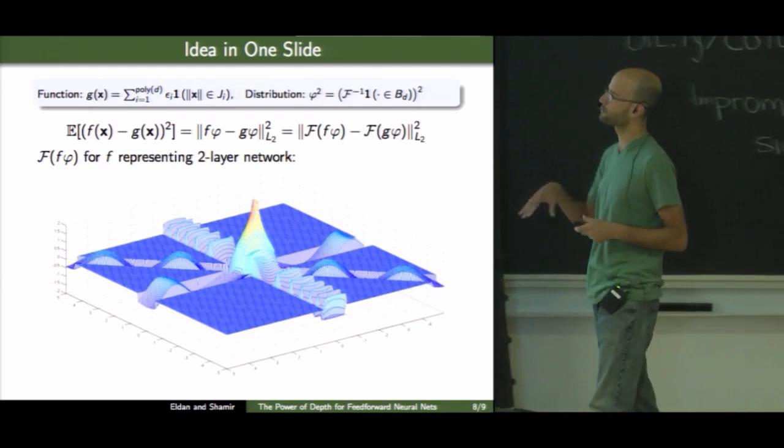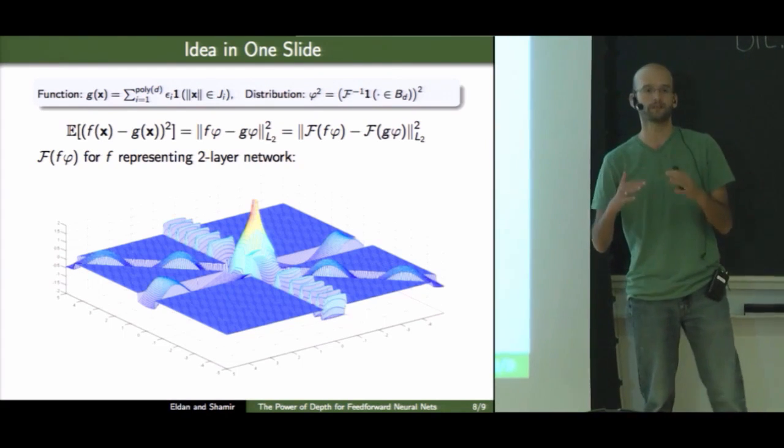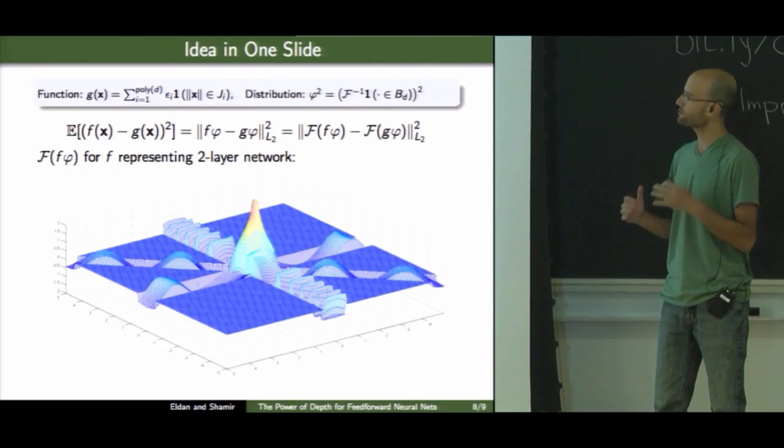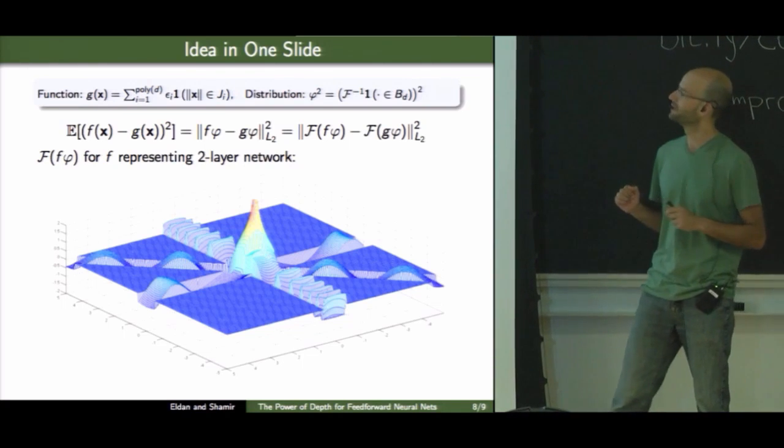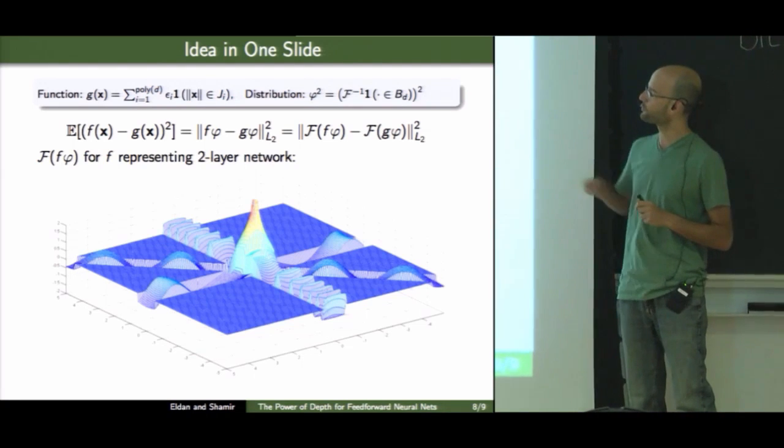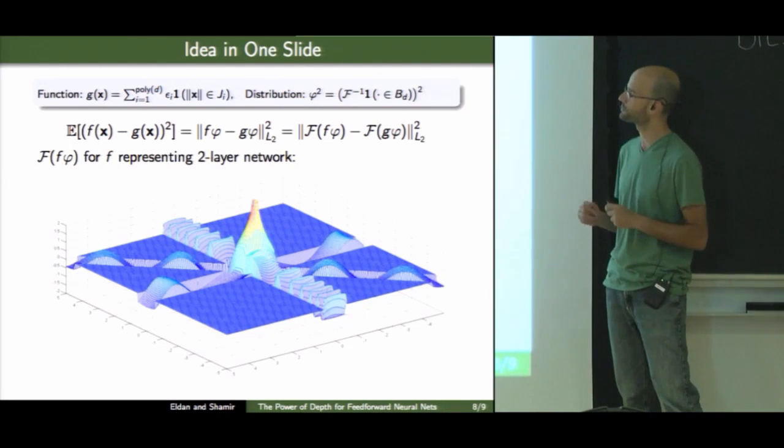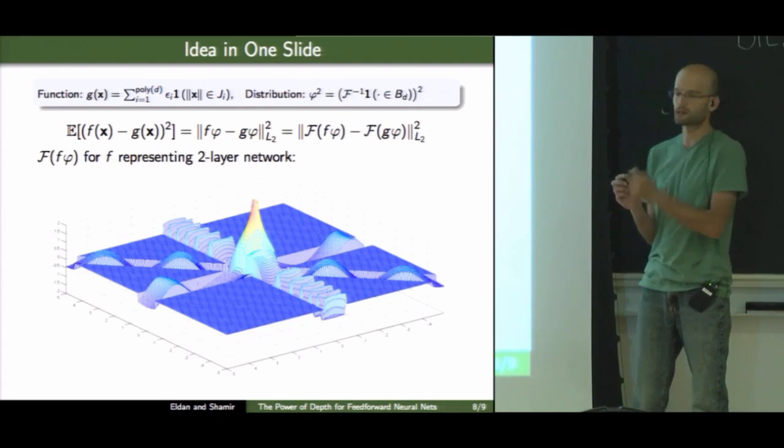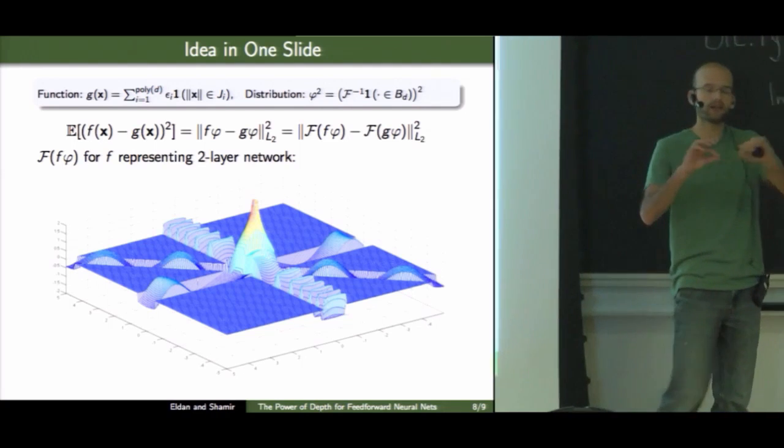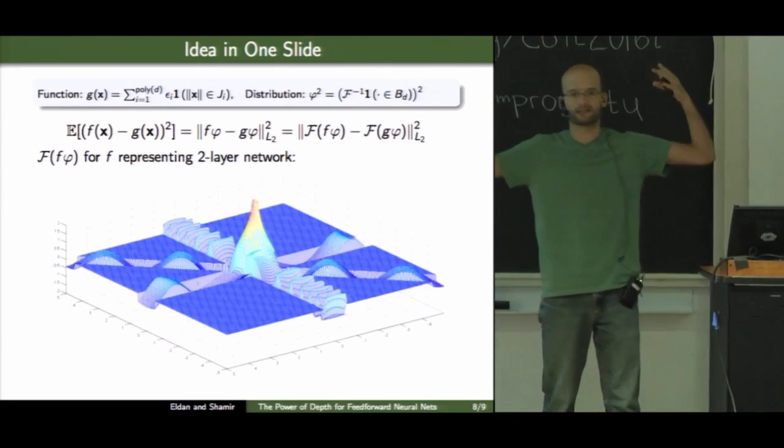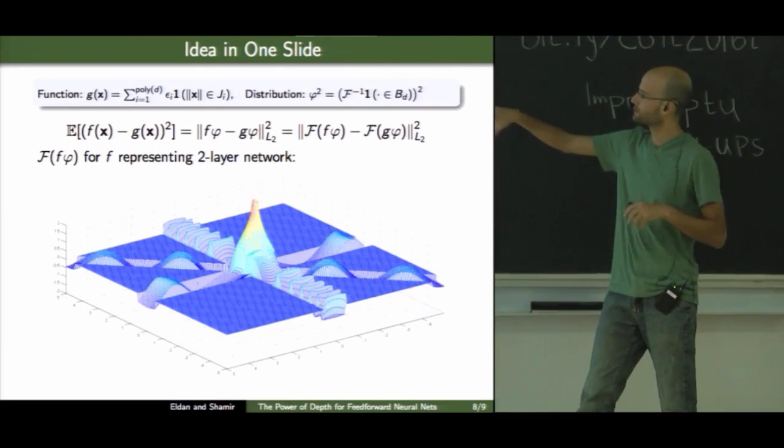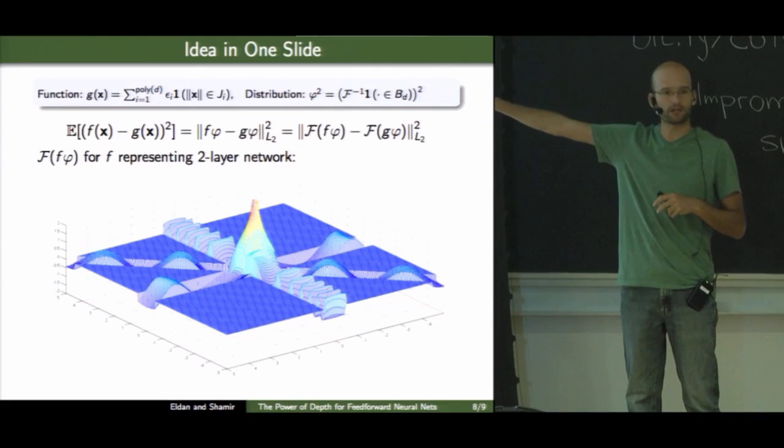And it turns out the two layer networks actually have a very special structure. So, roughly speaking, if I have n neurons in my network, its Fourier transform with respect to the distribution we use is supported on n relatively narrow tubes in R^d. So again, think of d as large in high dimensions. So actually, it's a very, very sparse support.